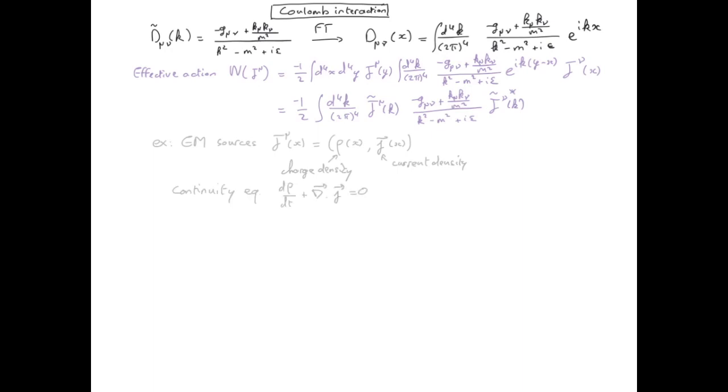This means that the variation of the charge in a given small volume is equal to the flux of these charges through the surface surrounding this volume. In covariant form, the continuity equation is simply del mu j mu equal to zero. And if I take the Fourier transform of this equation, the covariant derivative simply becomes i times the momentum.